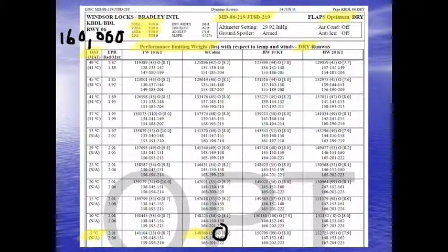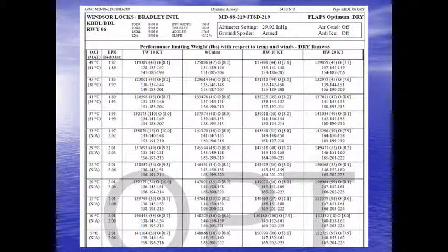At really warm temperatures — 37 degrees Celsius, for example — on a calm day we have a maximum of 137,374 pounds, which is well under our structural max of 160,000 pounds. You might think we could use headwind information: if there's a good headwind of 10 or 20 knots down the runway, we can see that headwind data in the chart and potentially take off at a heavier weight.